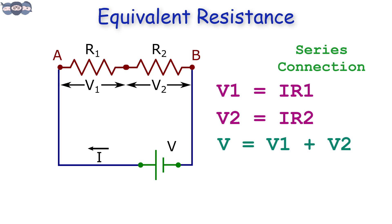V can be equated to I into R equivalent, where I is the total current and R equivalent is the equivalent resistance of the circuit. This V can also be equated to IR1 plus IR2.